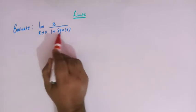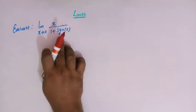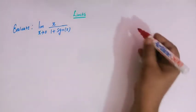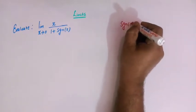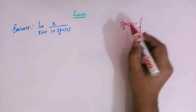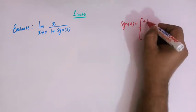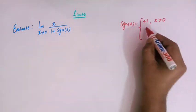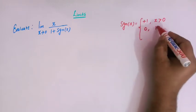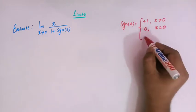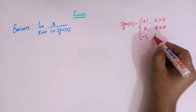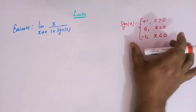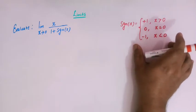The function involves the signum function, so before proceeding let us first see the definition of signum function. Signum of x takes the value plus 1 for all x greater than 0, the value 0 when x equals 0, and the value minus 1 whenever x is less than 0.